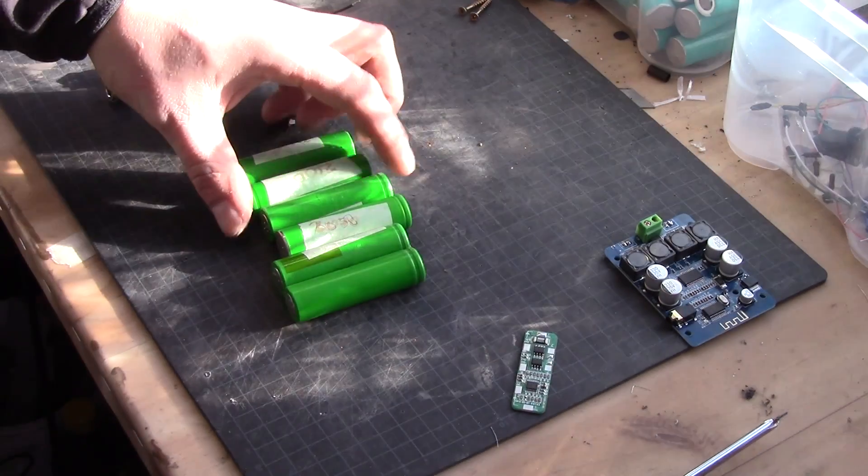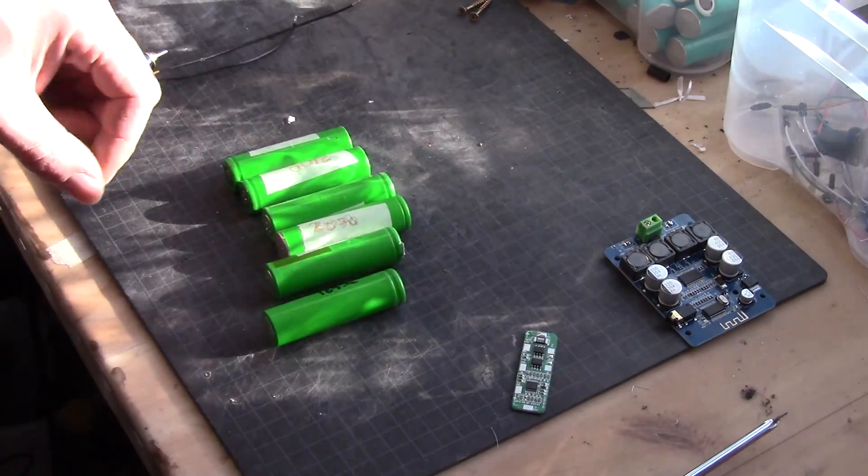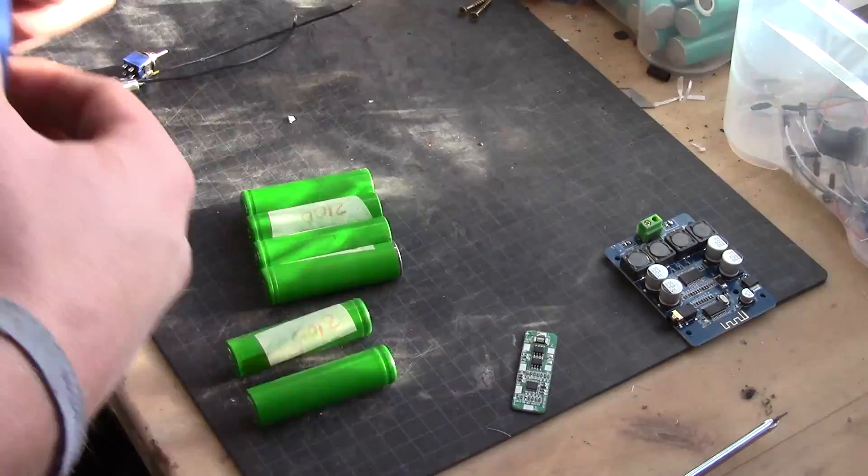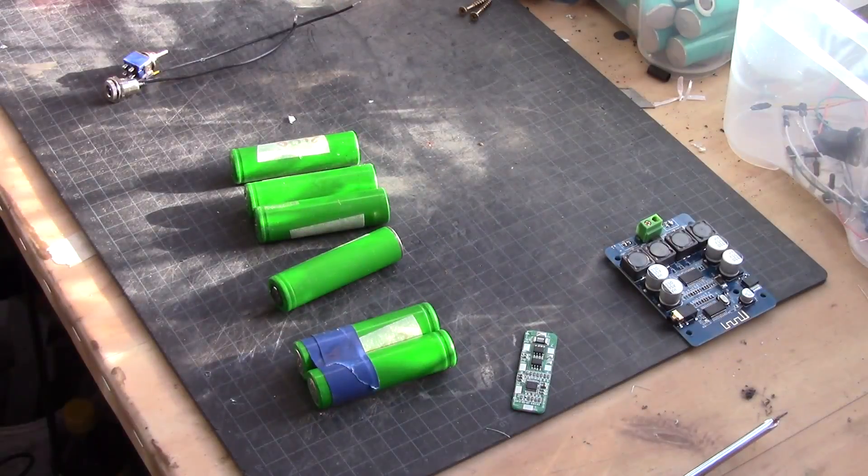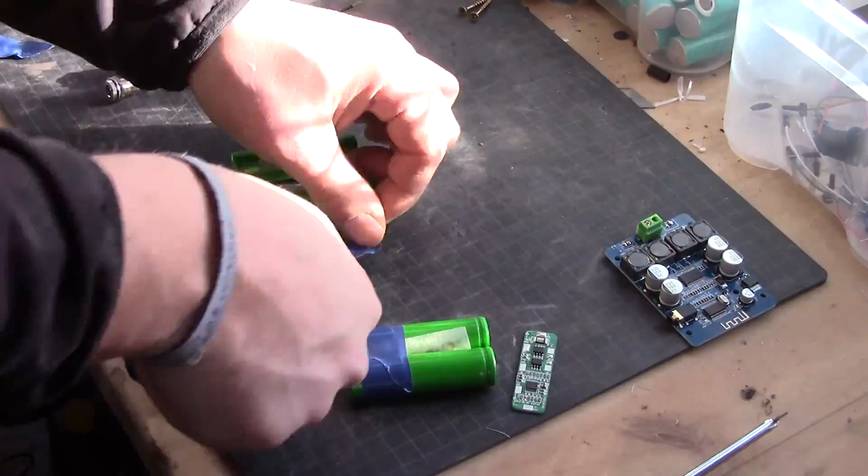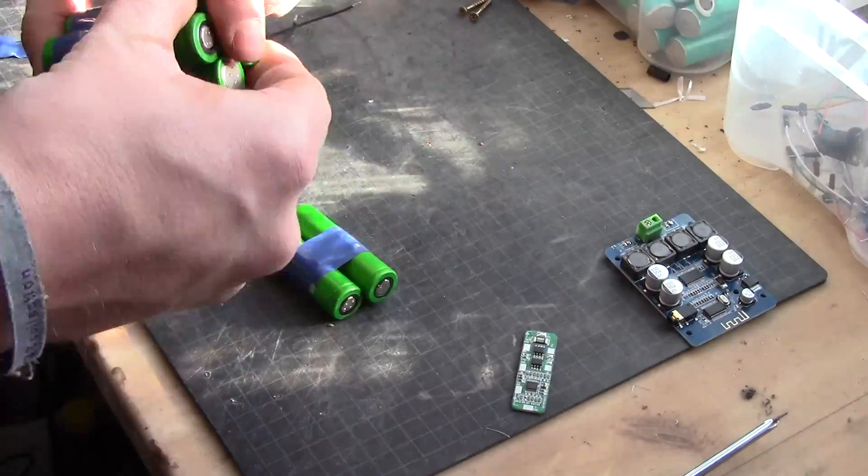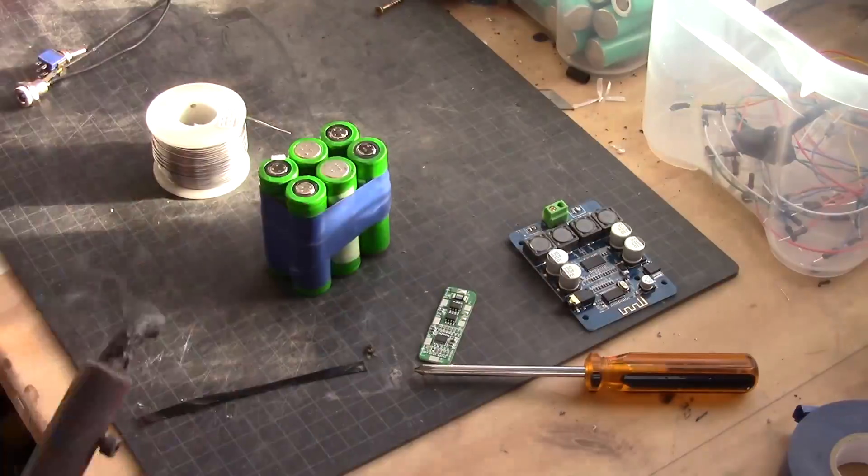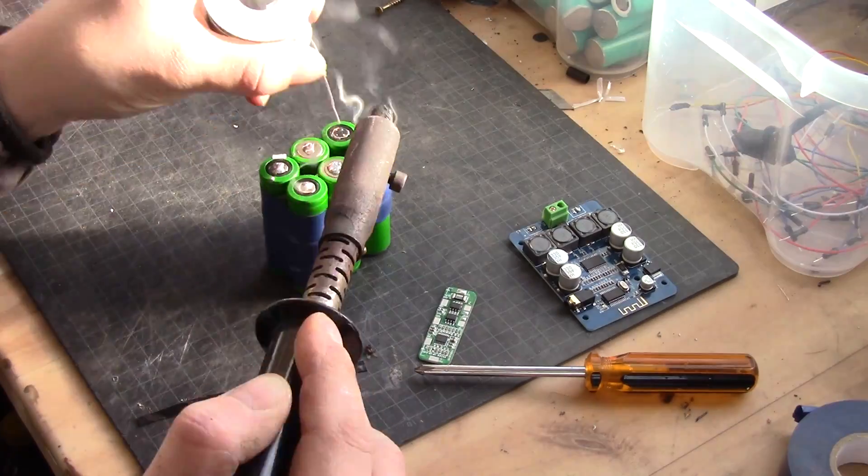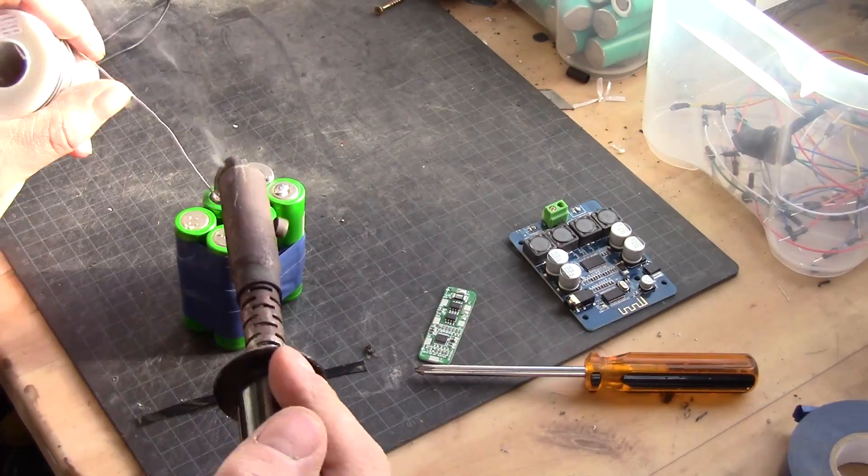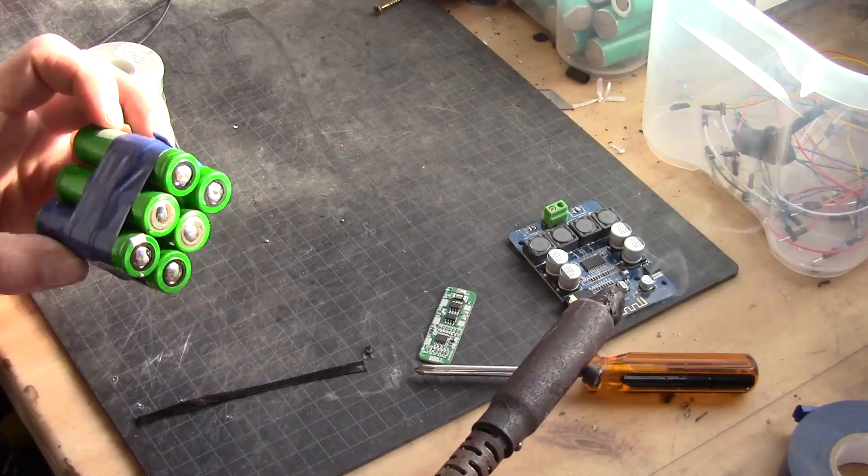Basically we have all four batteries here. So let's tie them together. I'm just using normal tape to actually hold them together until I have wrapped them up. Quick solder on them to make it working.